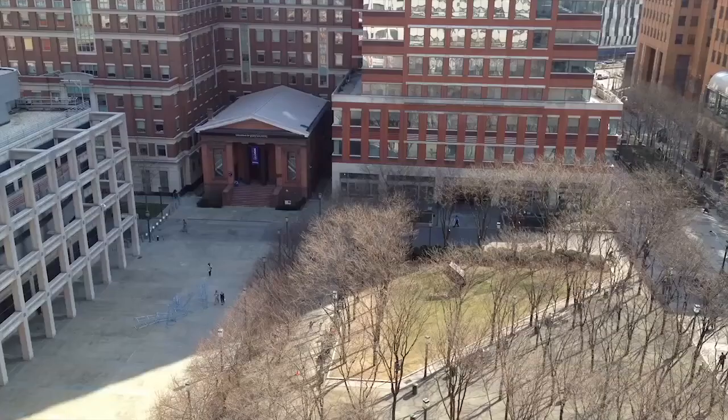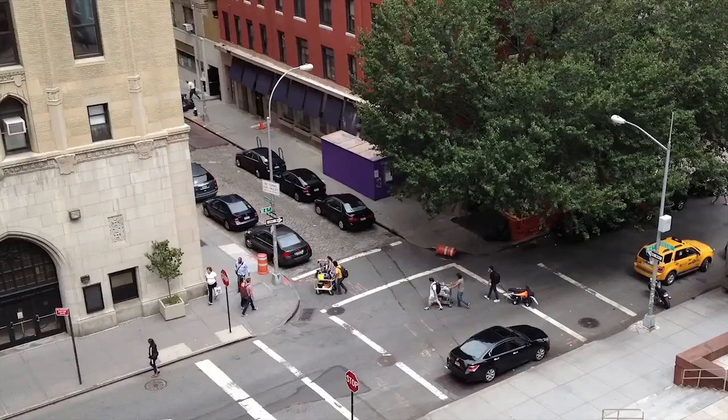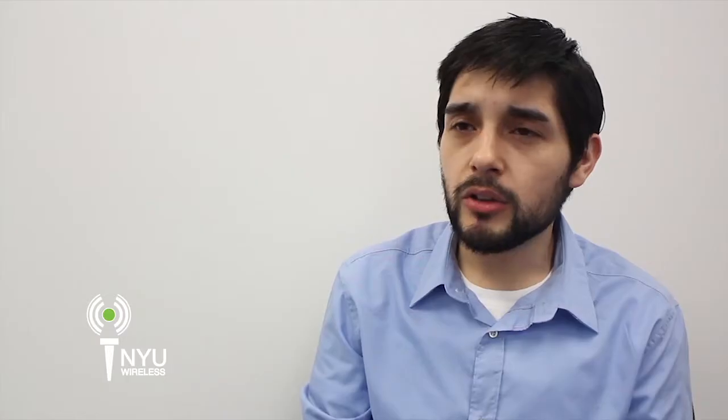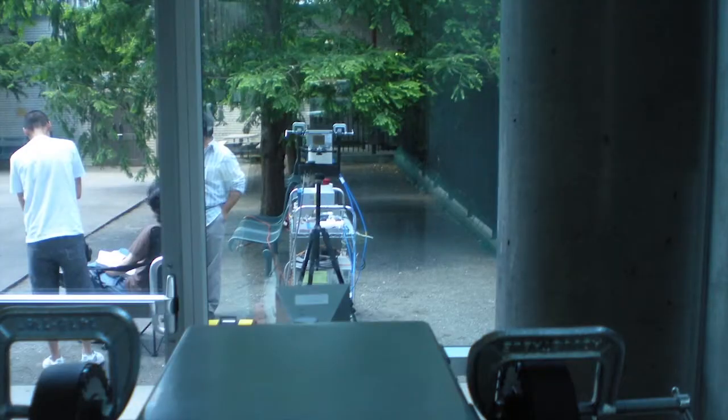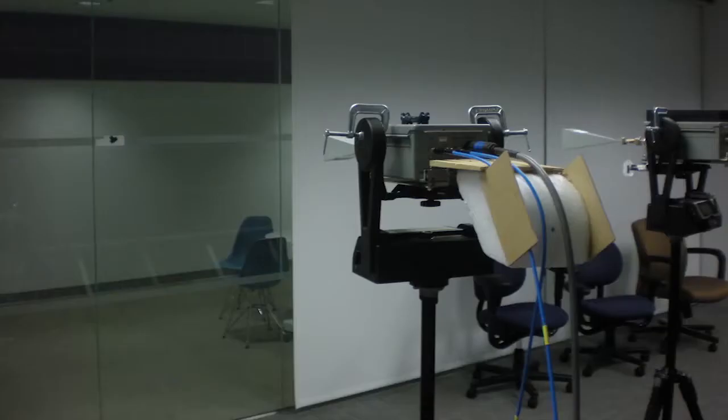We also selected random receiver sites in common pedestrian areas such as sidewalks, courtyards, parks and plazas, all within several blocks of the transmitters. We also wanted to study how 28 GHz propagates into a building, so we conducted signal strength tests to measure reflection and penetration through building materials such as brick, concrete, glass, and drywall.